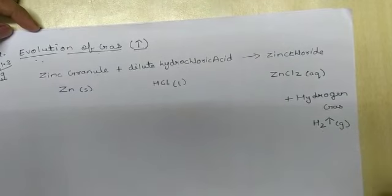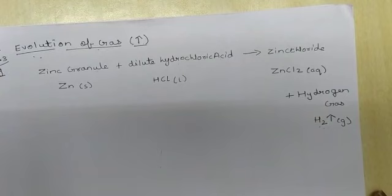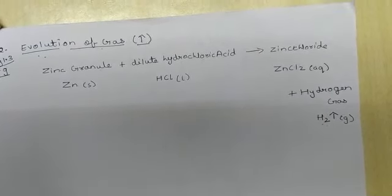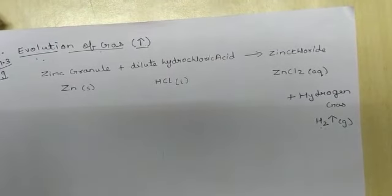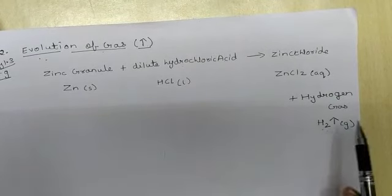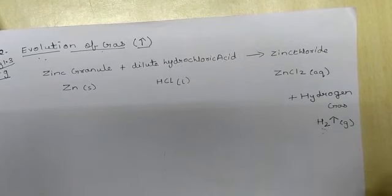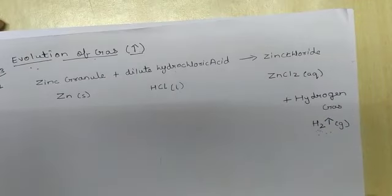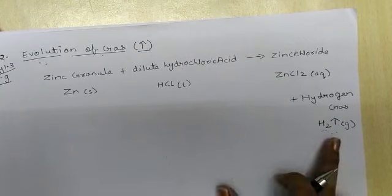How do you know it is hydrogen gas? There is a confirmatory test: when you do this activity in school, hold a burning candle or burning matchstick near the mouth of the test tube. When it burns with a pop sound, it confirms that hydrogen gas is present. So the second characteristic is evolution of gas.